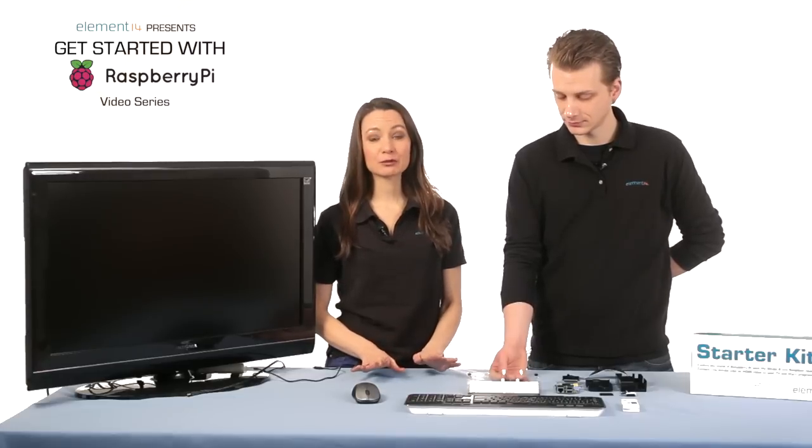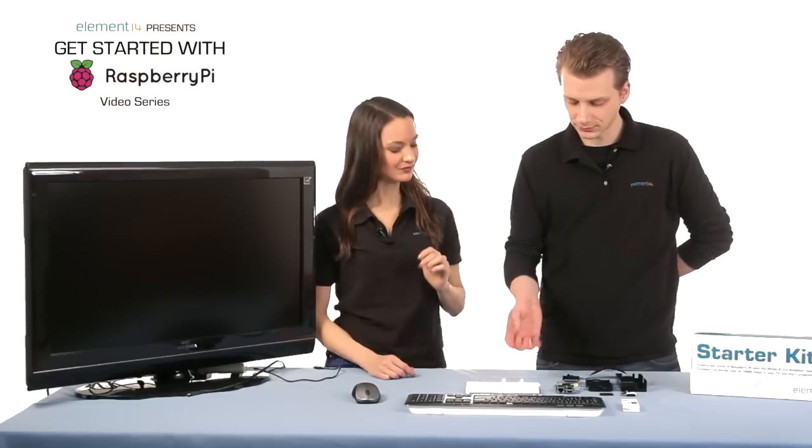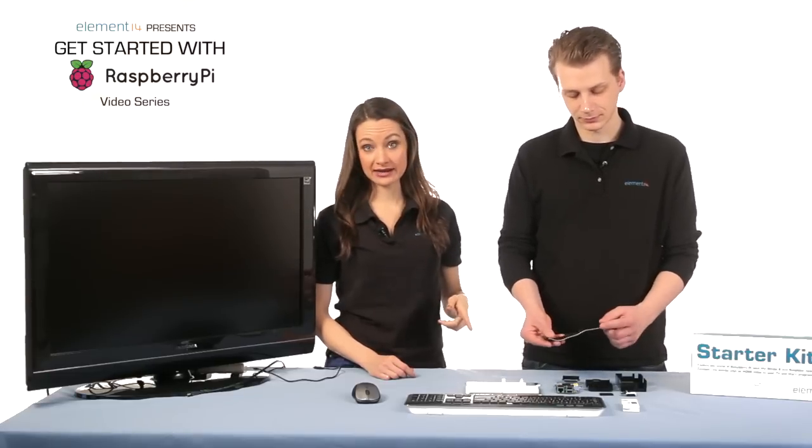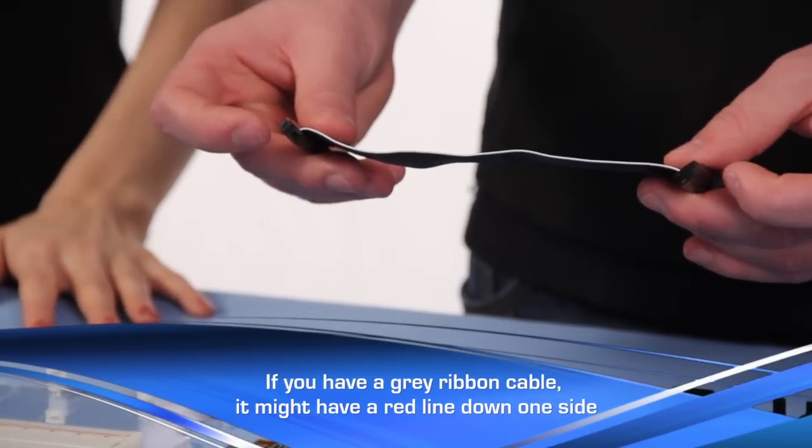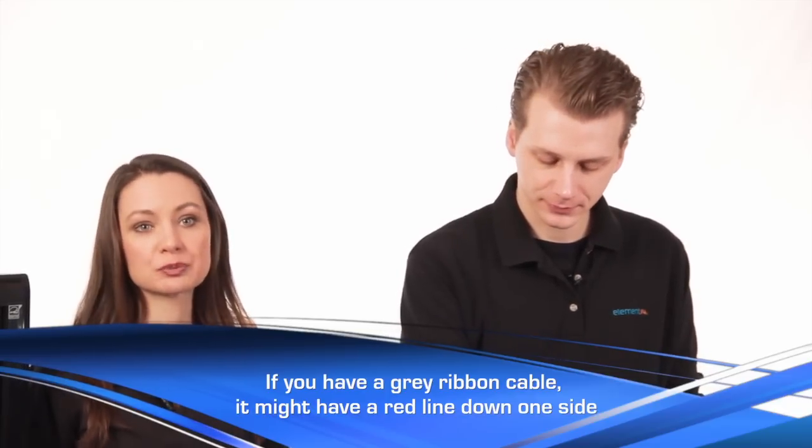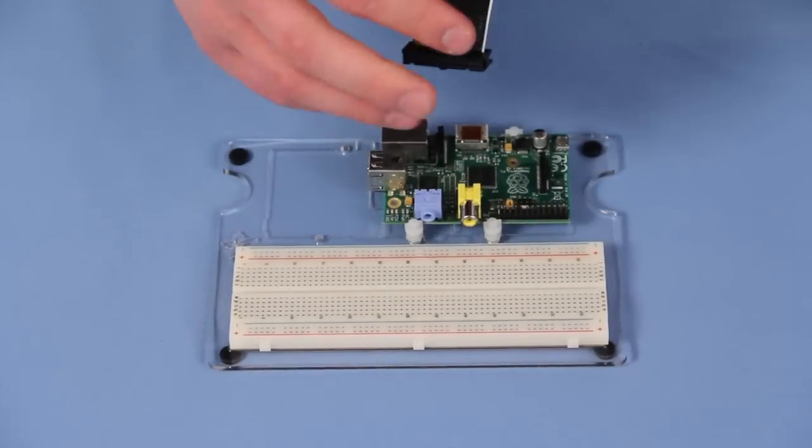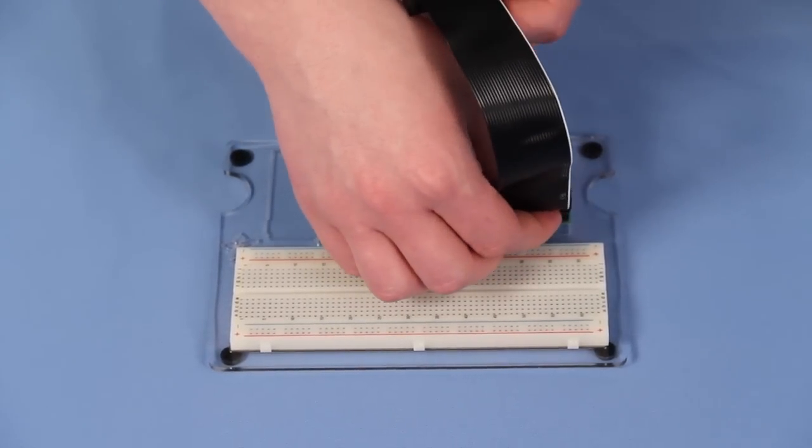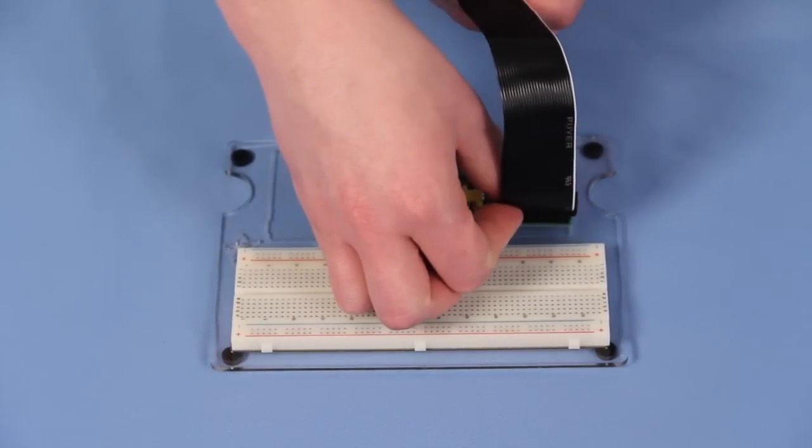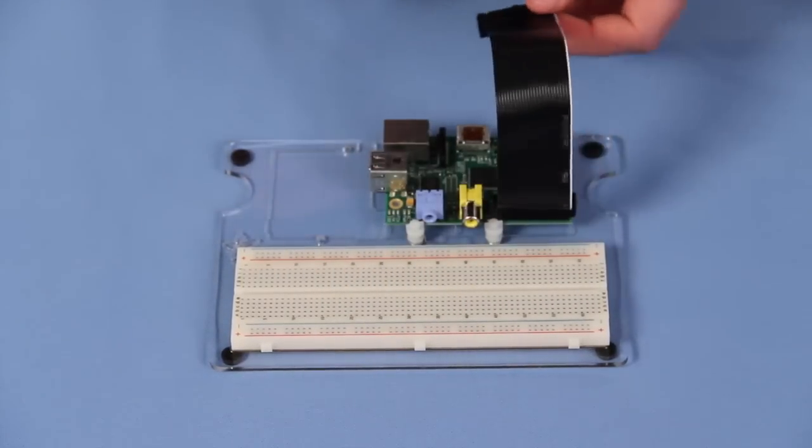So let's go ahead and connect this Pi cobbler to the Raspberry Pi. You'll notice that this ribbon cable has a white line down one side. The line represents the side of the ribbon that should be connected to pin 1. On the Pi pin 1 is in the corner of the board so you just plug in ribbon with the line on the corner side. But just be careful because you can actually plug it in backwards.